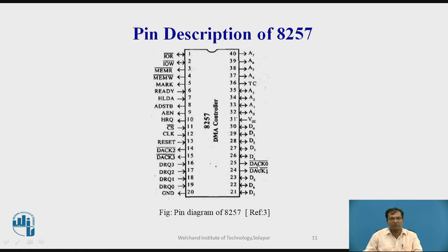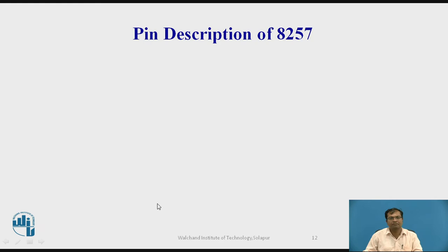Now we will focus about all these pins in detail. DRQ, so DMA request, DRQ0, DRQ1, DRQ2, DRQ3. Since there are four channels, four requests through those channels are arising. Next we are having acknowledgement, their respective acknowledgement like DACK0, DACK1, DACK2, DACK3.